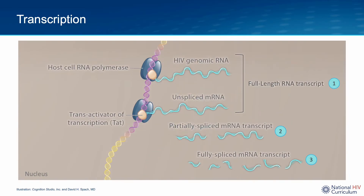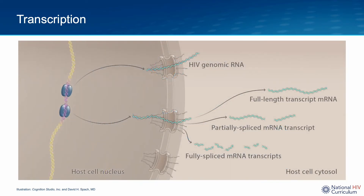HIV RNA can be grouped into three categories based on splicing: full-length RNA, partially spliced mRNA, and fully spliced mRNA. The newly formed RNA leaves the host cell nucleus. The unspliced genomic HIV RNA migrates to the cell surface where it is packaged into a new virion. The mRNA transcripts that migrate into the cytoplasm serve as templates for the synthesis of HIV proteins, beginning the next stage in the HIV life cycle: translation.